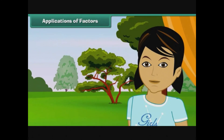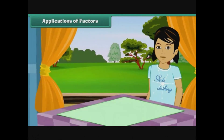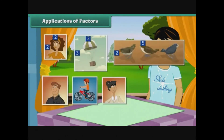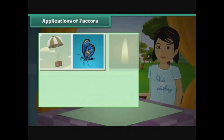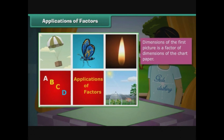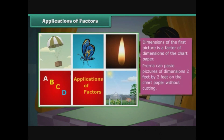Applications of factors. Prerna has a chart paper that is four feet long and six feet wide. She has to paste pictures on the chart paper and has six pictures each of three different dimensions: two feet by two feet, three feet by three feet, and two feet by five feet. Pictures of which size can she paste without cutting them? We check if the dimensions of the pictures are factors of the dimensions of the chart paper. The dimensions of the first picture are factors of the chart paper's dimensions. Therefore, Prerna can paste pictures of two feet by two feet without cutting.